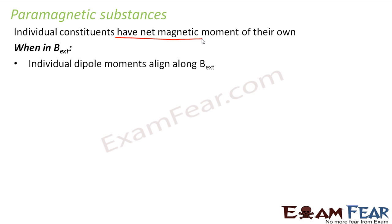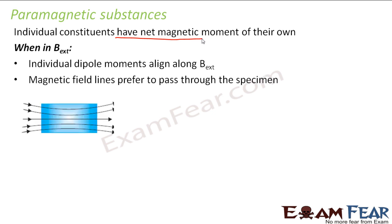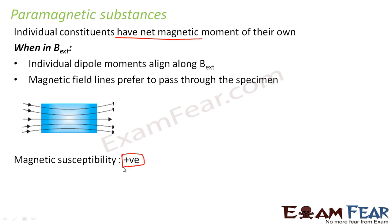In this case, the magnetic field lines prefer to pass through the specimen — the field lines are kind of getting attracted by the specimen. This is quite different from what we observed for diamagnetic materials. Here, magnetic susceptibility is positive because the degree of magnetization in response to the magnetic field is a little more than that of a diamagnetic substance.